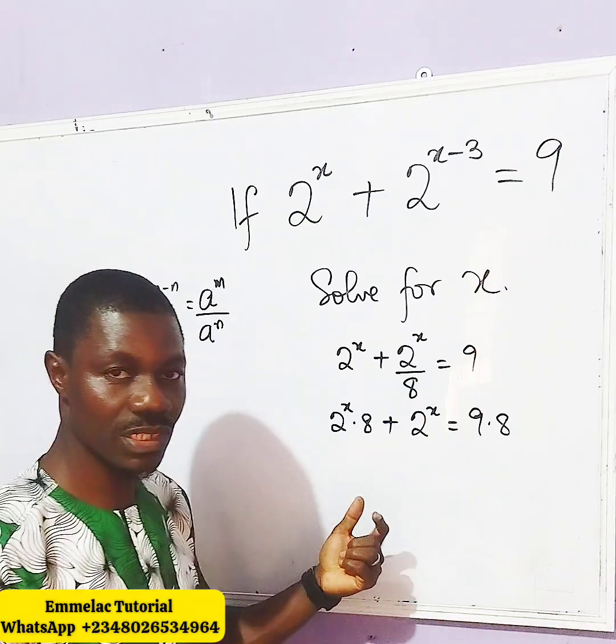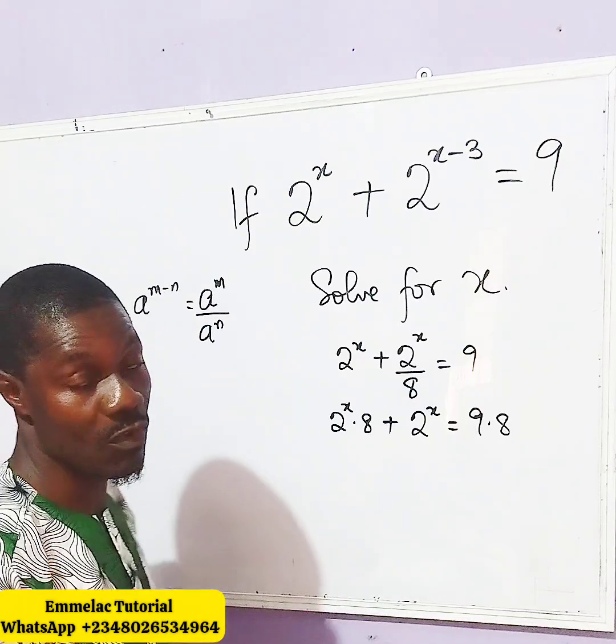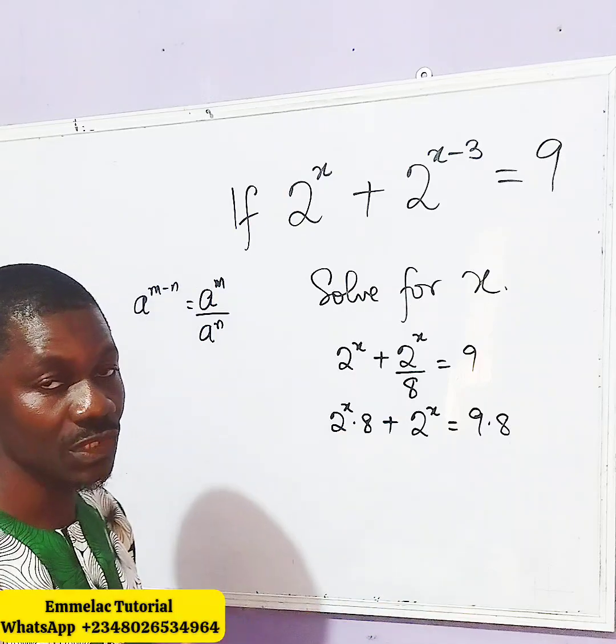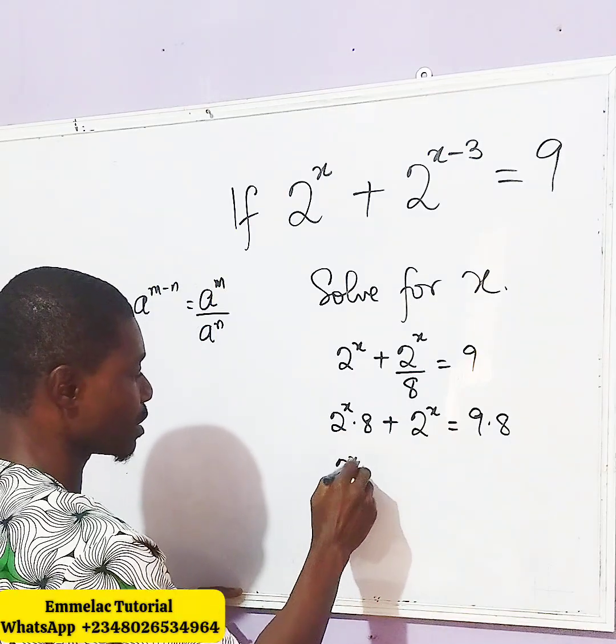If you look at the left hand side, you're going to see that we have a common factor between this and this which is 2 raised to x. So, let us factor that out. You have 2 raised to x.